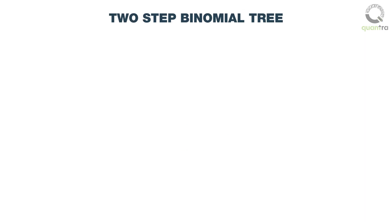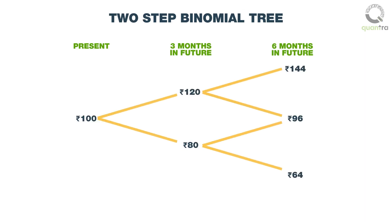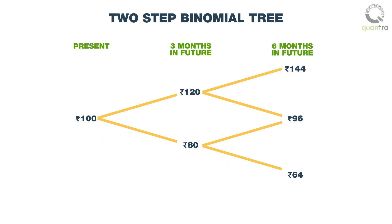We can extend this analysis to a two-step binomial tree as shown in the diagram. At each step, we assume the price can either go up or down by 20%. The time scale for each step is 3 months, and the option has 6 months to expiration. At the end of the first step, the underlying might either be priced at 120 rupees or 80 rupees. At the next step, that is at the time of expiration, the underlying might be at either 144 rupees, 96 rupees, or 64 rupees, computed using the assumption that prices can either go up or down by 20%.